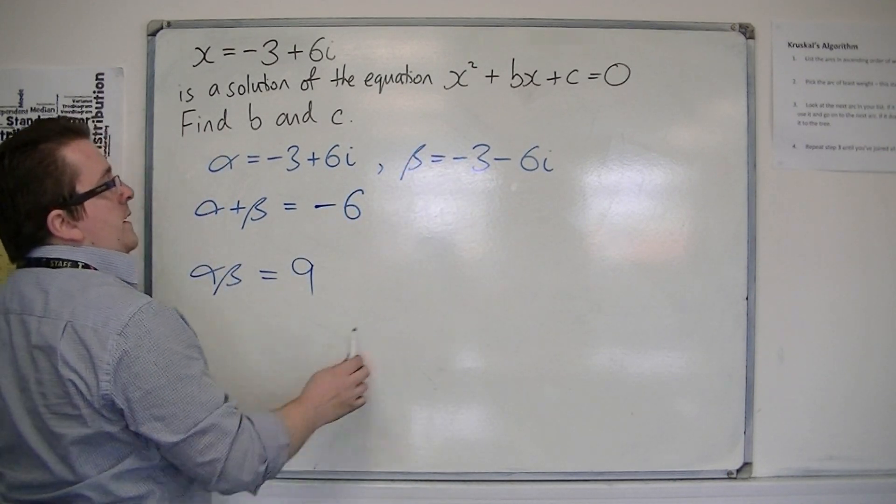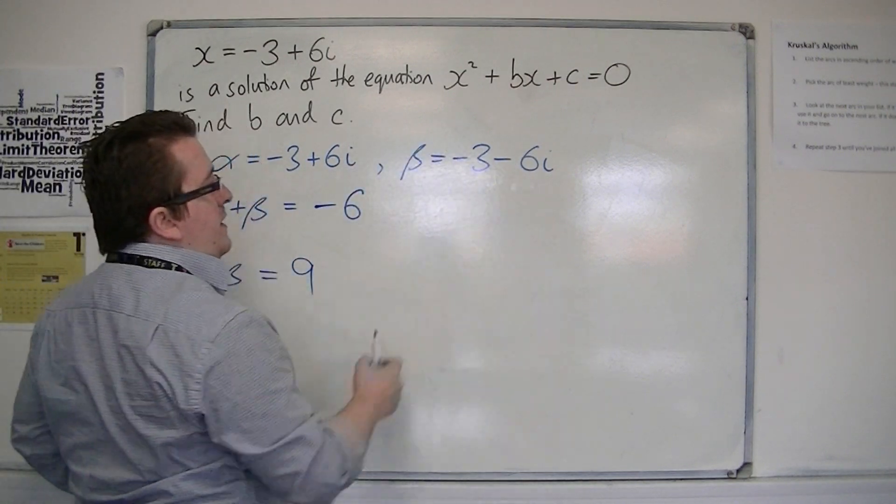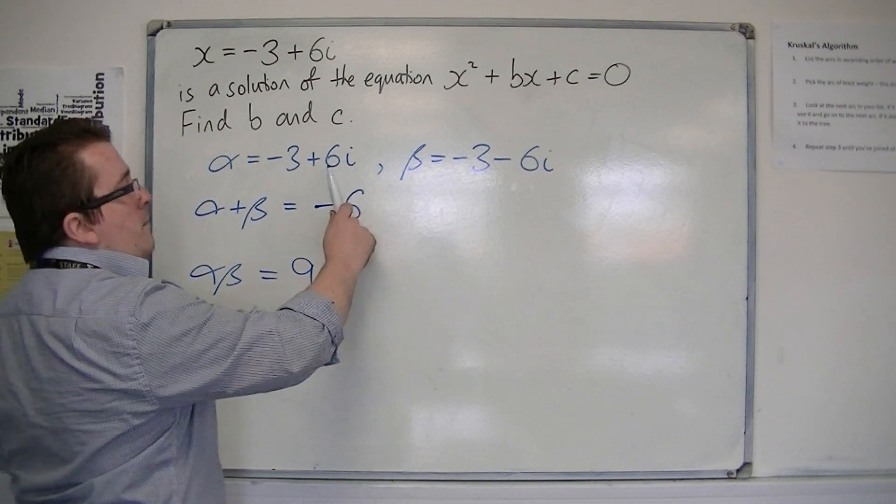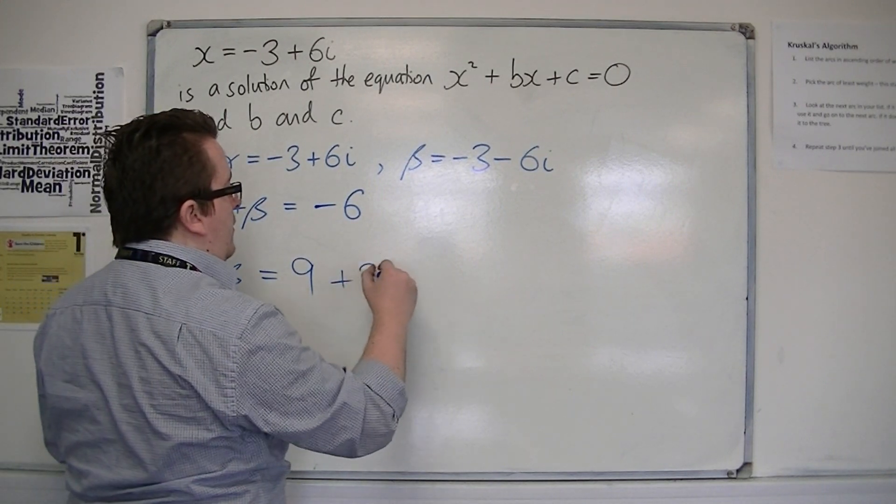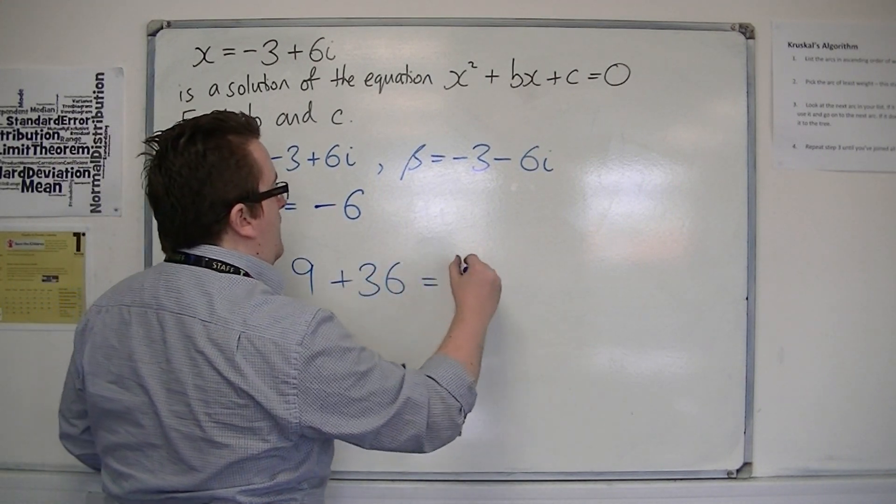And 6i times minus 6i is minus 36i squared, which is plus 36, so that makes 45.